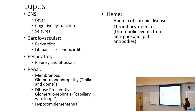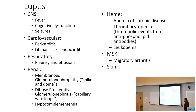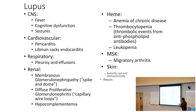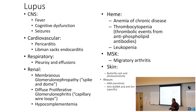Lupus also causes leukopenia, migratory arthritis, butterfly rash, and photosensitivity. The rheumatological associations include ANA as a sensitive marker, while anti-double-stranded DNA and anti-Smith are more specific.